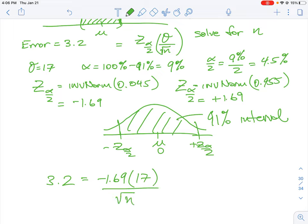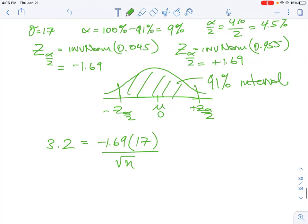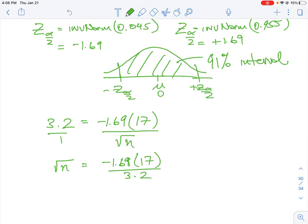Now we do a little algebra to move the terms around to solve for n. Cross multiply, so root n equals 1.69 times 17 divided by 3.2.